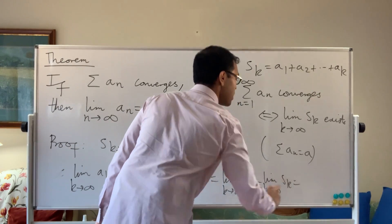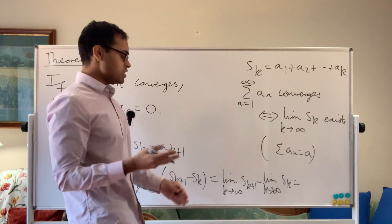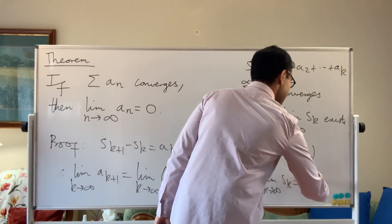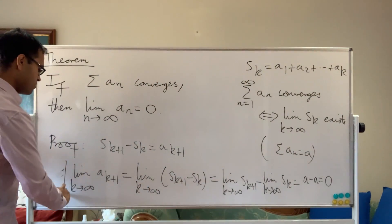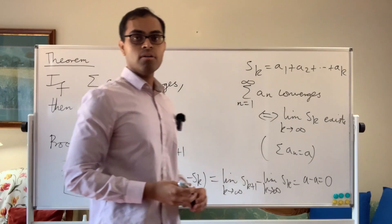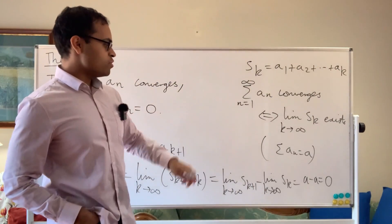And since each of these partial sums is going to go to, or each of these partial sums is going to go to the sum of the series, which is a, we know this is a minus a, which is just equal to 0. So therefore, we conclude the limit of the terms in the series is going to equal to 0. And that works irrespective of whether the terms are positive or negative. I've just given you a proof here.